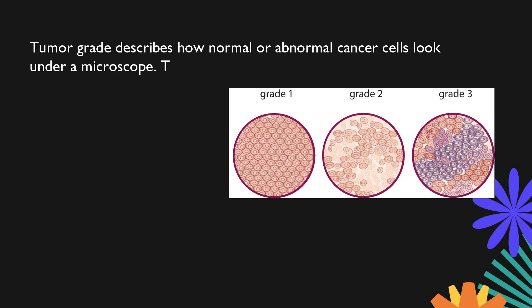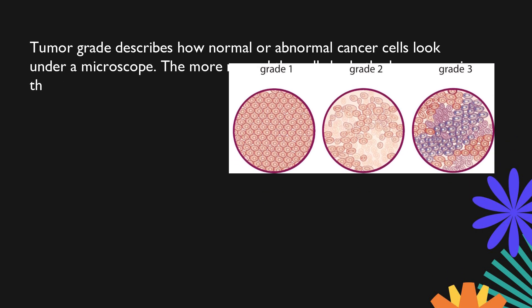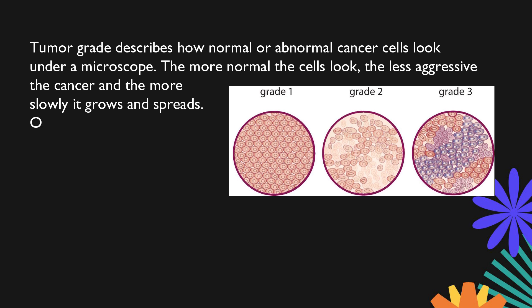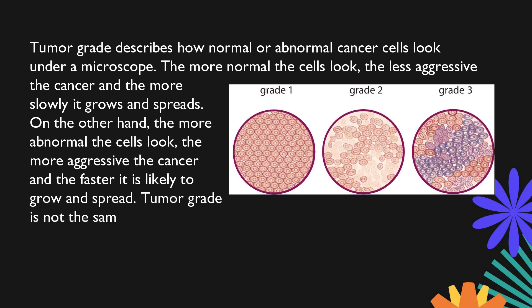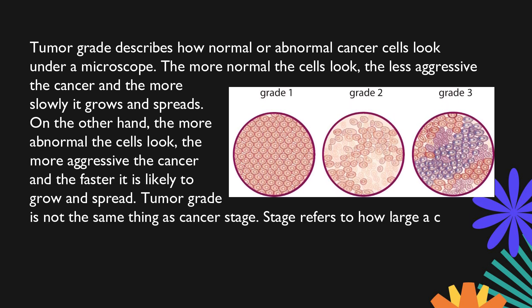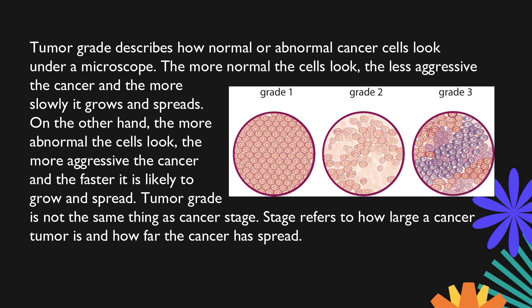Tumor grade describes how normal or abnormal cancer cells look under a microscope. The more normal the cells look, the less aggressive the cancer and the more slowly it grows and spreads. On the other hand, the more abnormal the cells look, the more aggressive the cancer and the faster it is likely to grow and spread.